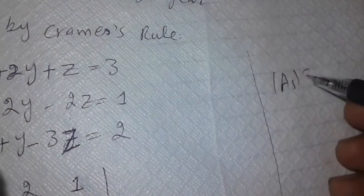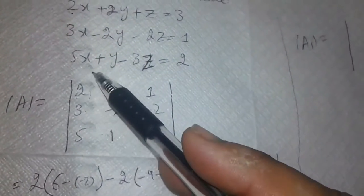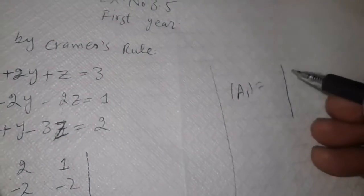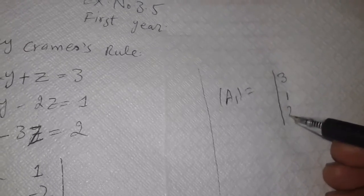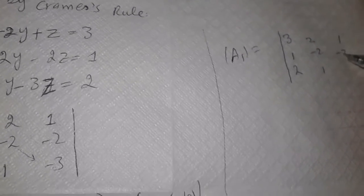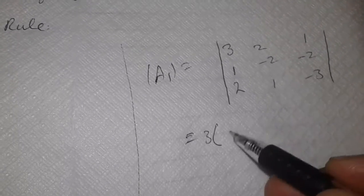The A1 determinant is equal to the determinant of a modified matrix. For the first variable A1, we replace the first column with the right-hand side values of all equations, which are 3, 1, and 2. Both the second and third columns remain the same: 2, minus 2, and 1 for the second column; 1, minus 2, and minus 3 for the third column.